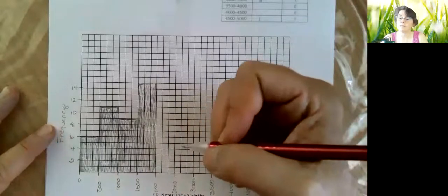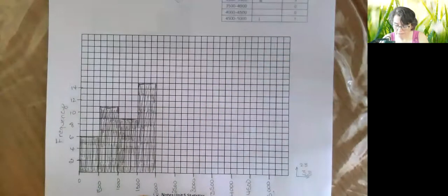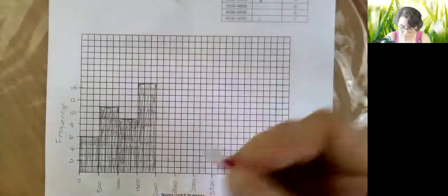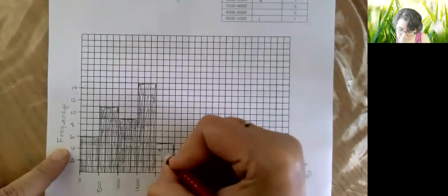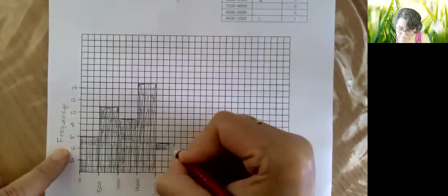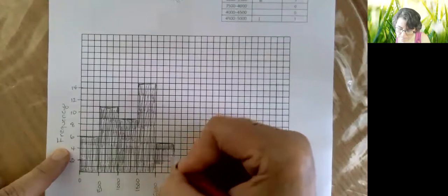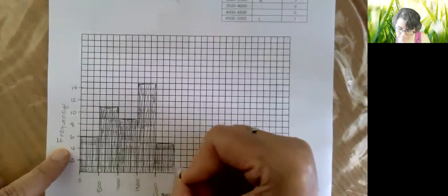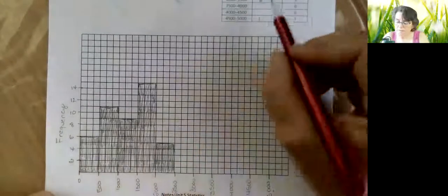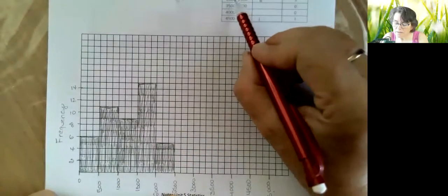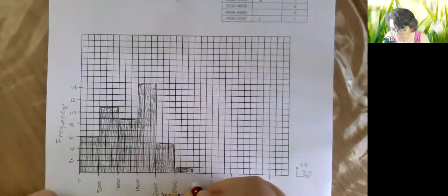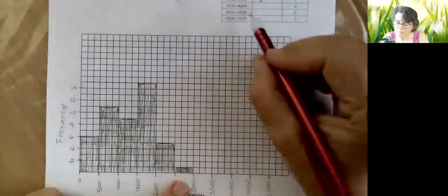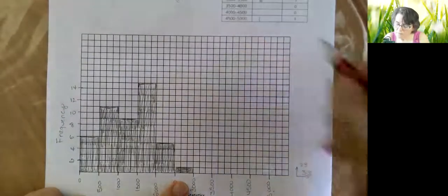Like I said, you can have fun, use different colors, whatever makes you happy. From 2000 to 2500 that was five years. 2500 to 3000, oh it's only one year. 3000 to 3500 was three.